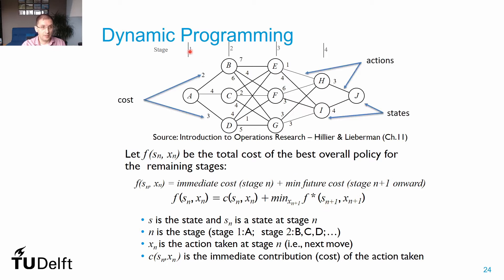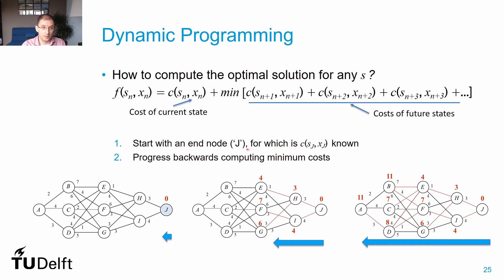We define stage 1 as node A, stage 2 as nodes B, C, and D, stage 3 as E, F, and G, and so on. Costs are associated with each action (arc). For example, going from state A to state B has a cost of 2. The total cost function at a given state and action equals the current state cost plus the minimum cost of all future stages until we reach the end of the network.